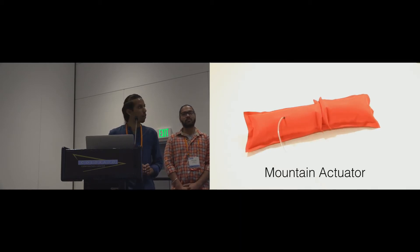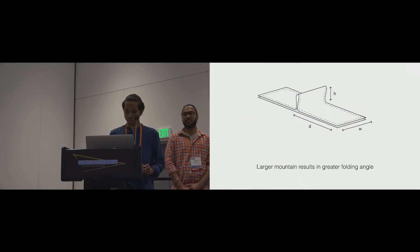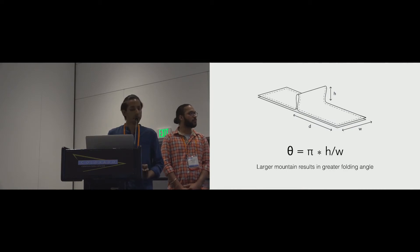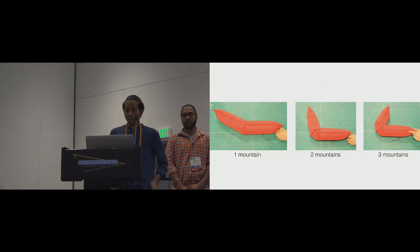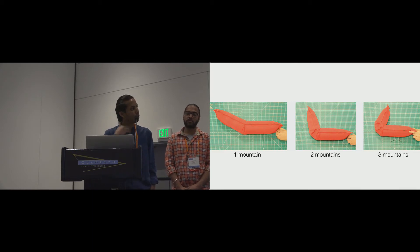So now, let's go through the details of the mountain actuator. An analytically derived equation shows the dependence of the angle on the geometry of the mountain, in particular its height and width. A naive way of understanding this equation is a larger mountain results in greater folding angle. An alternate way to increase the folding angle is to position or distribute a number of mountain folds across an object.